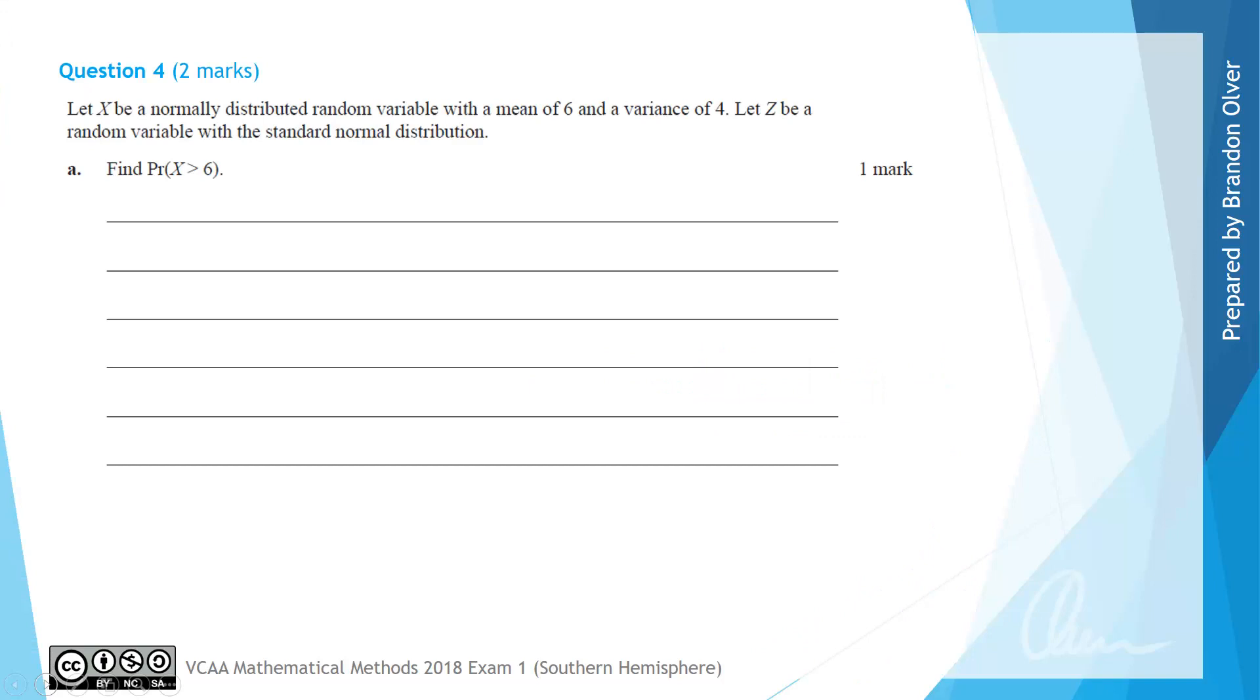For this question we have let X be a normally distributed random variable with a mean of 6 and a variance of 4. Let Z be the random variable with the standard normal distribution. For part A we are asked to find the probability that X is greater than 6.